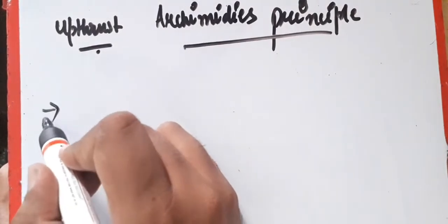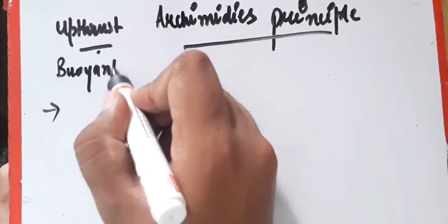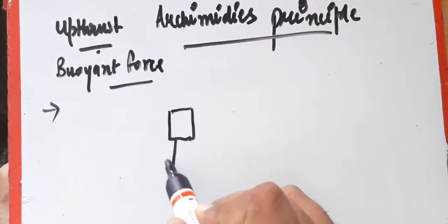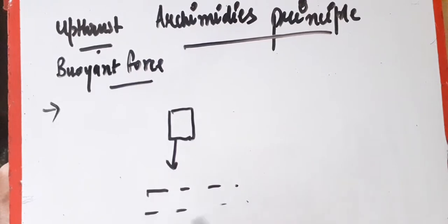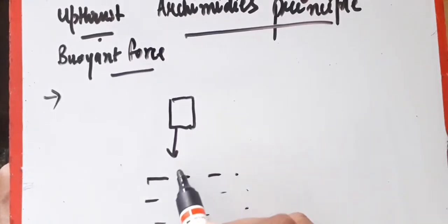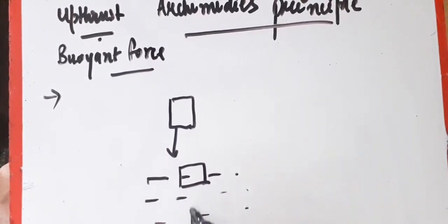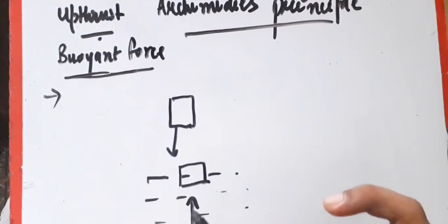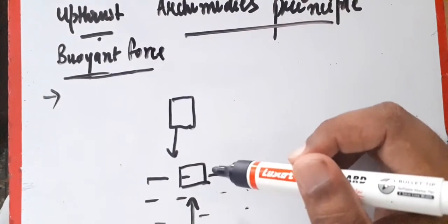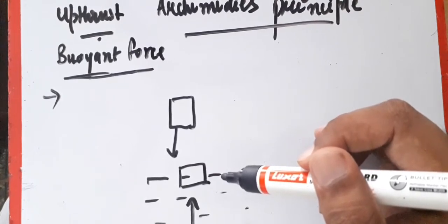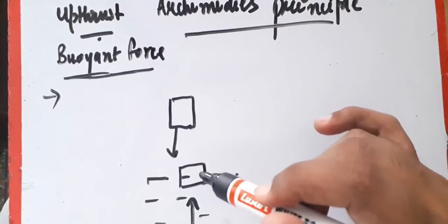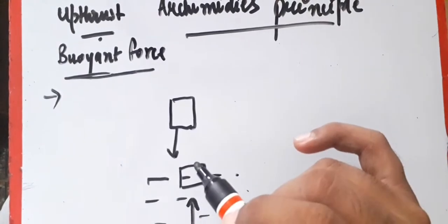Upthrust is also called buoyant force. When an object is dropped into some liquid, it experiences an upthrust force exerted by that liquid onto it. This upthrust force is called buoyant force. Every liquid — whether water, mercury, oil — exerts an upward force through the liquid itself onto the object, due to which the object could float.